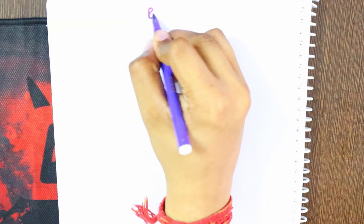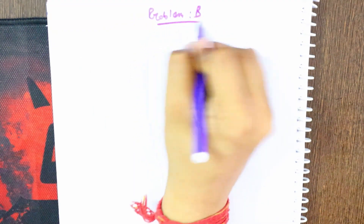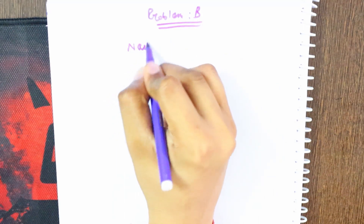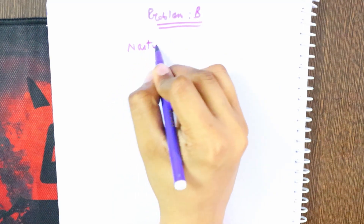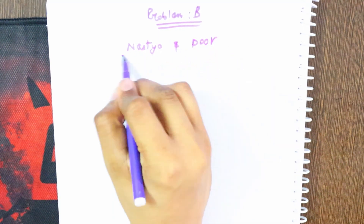Hello friends and welcome back. In this video we are having problem B, named Nastya and Doj. First I will explain the problem statement, what the problem actually says. After that we will move on to the approach and then the solution.